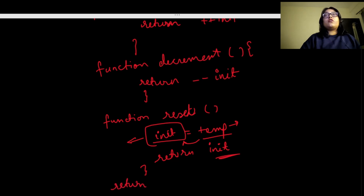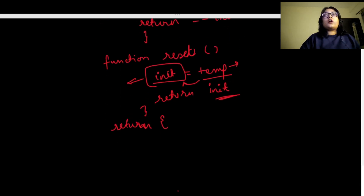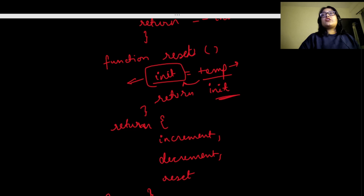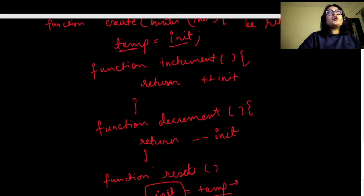We were asked to return the three functions in the form of an object. We'll use shorthand property notation, so we just write increment, decrement, and reset — since the key and value names are the same. That's the basic approach; any remaining doubts will be cleared with the code.